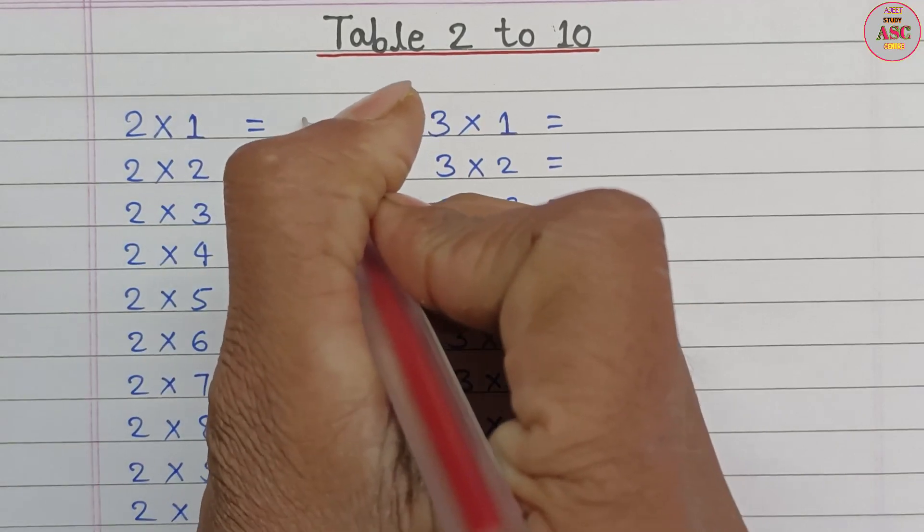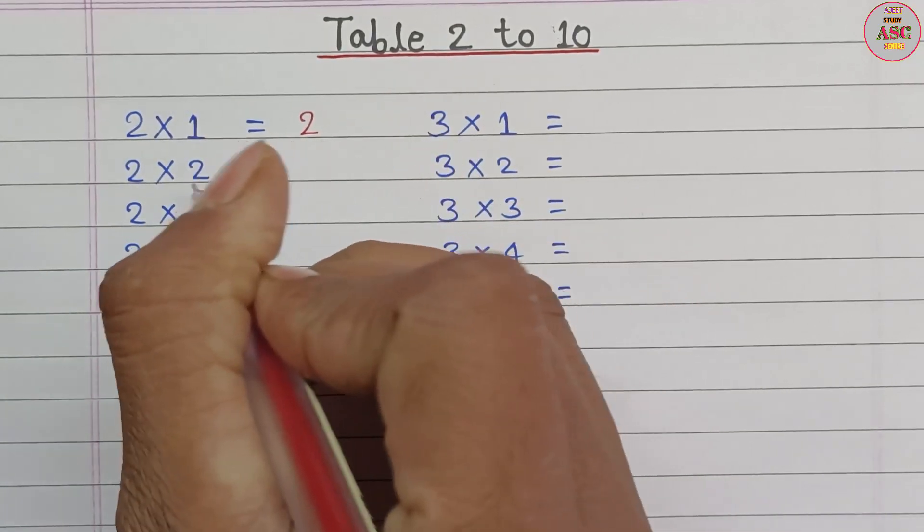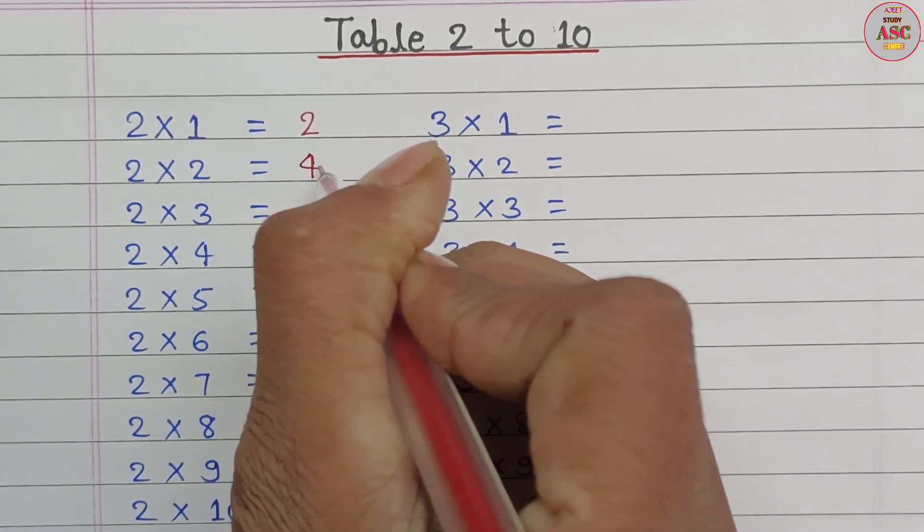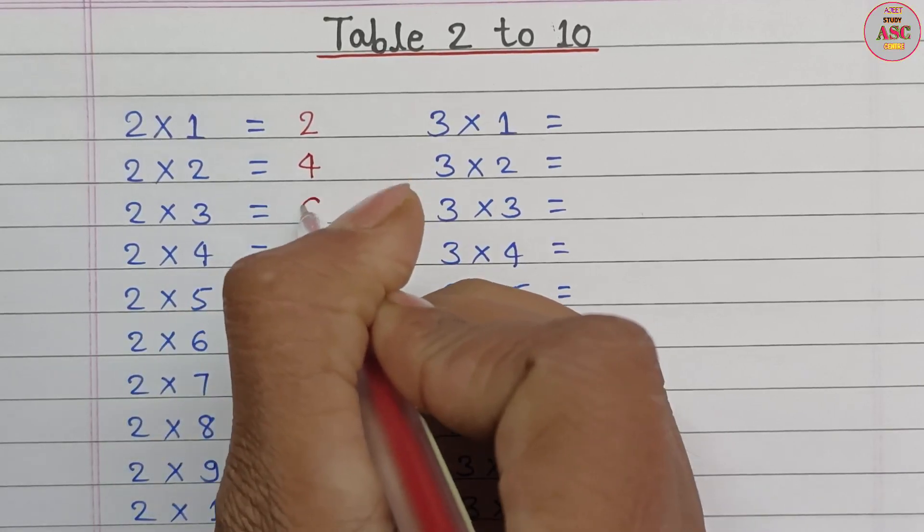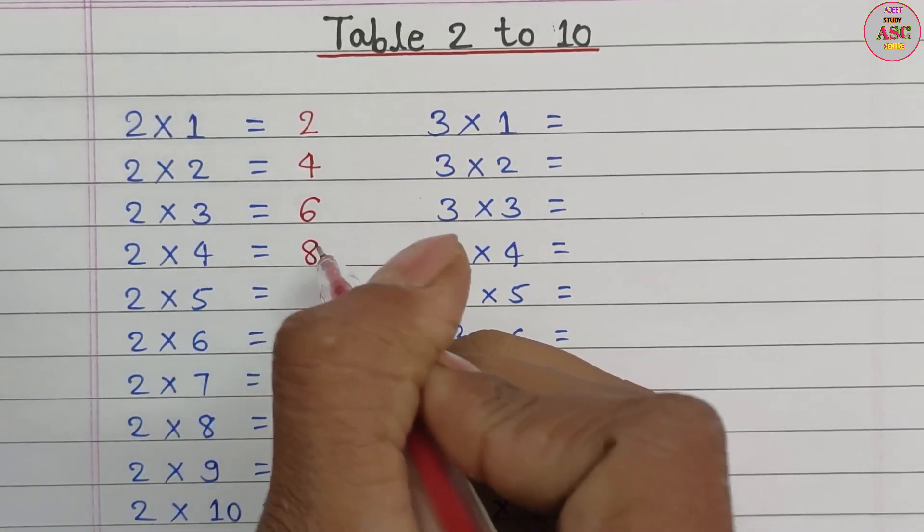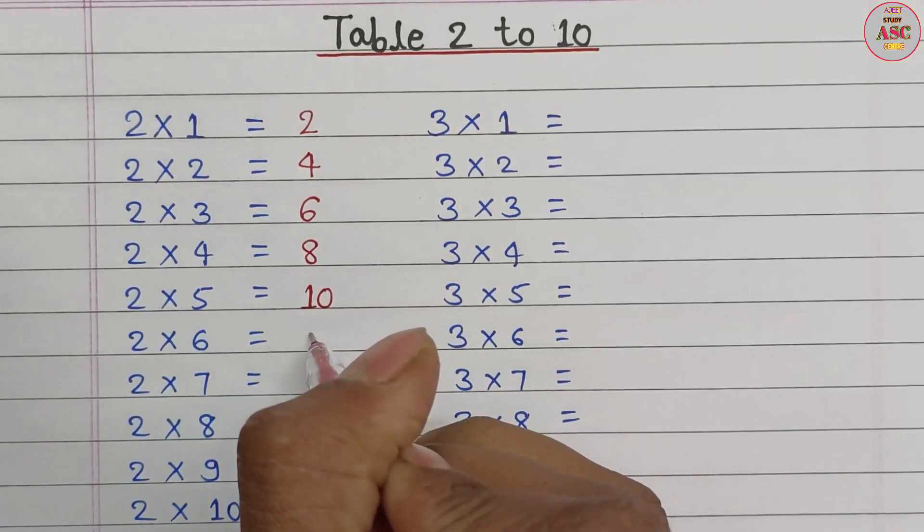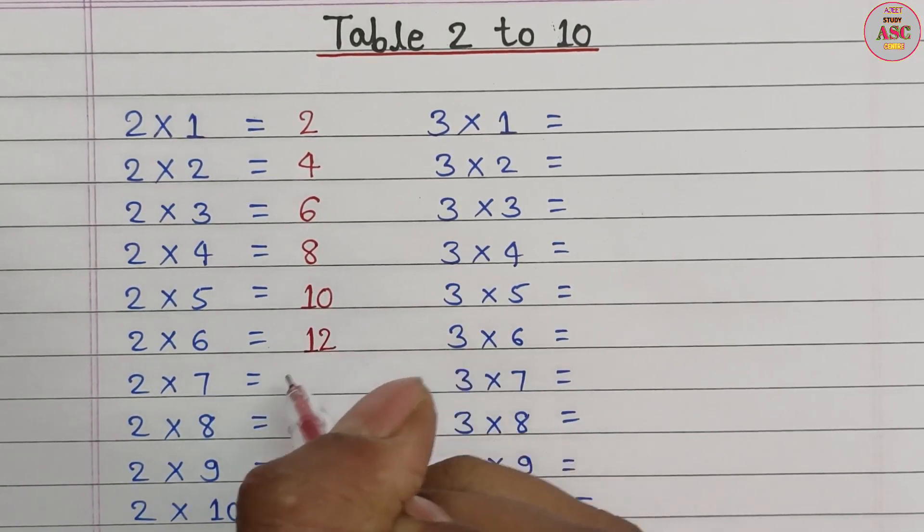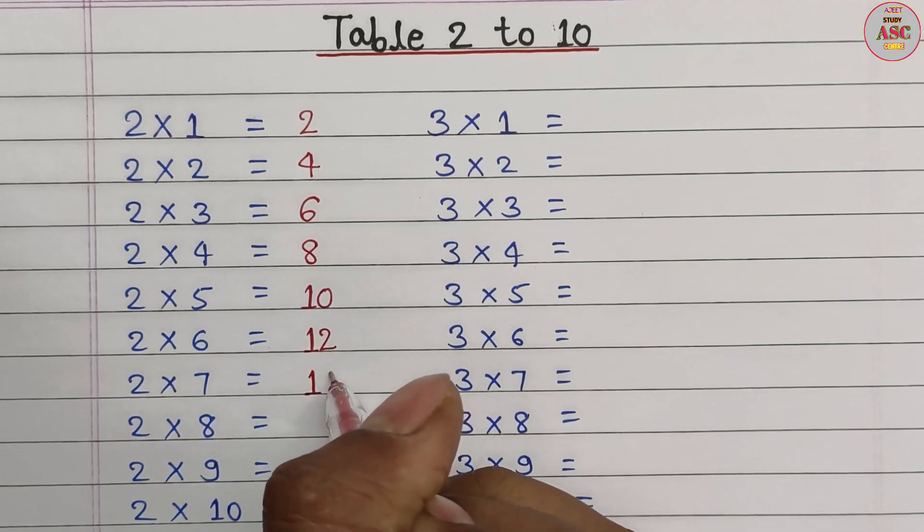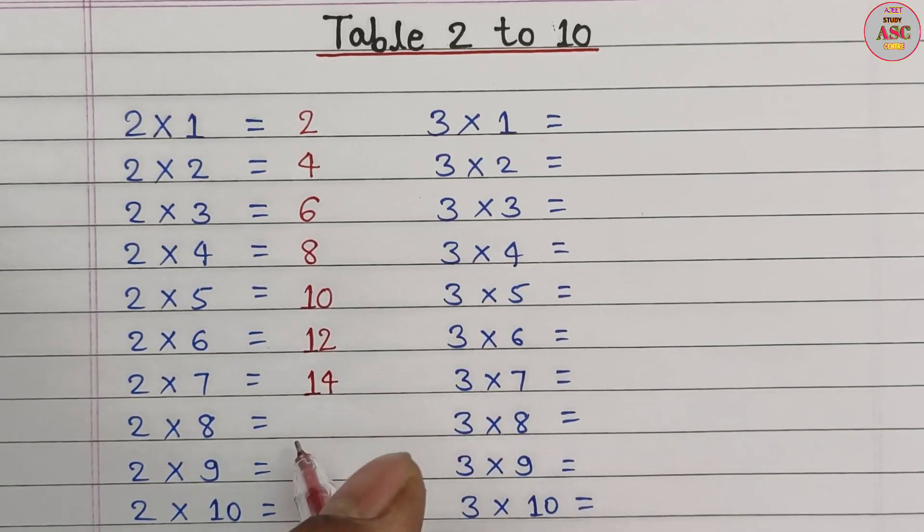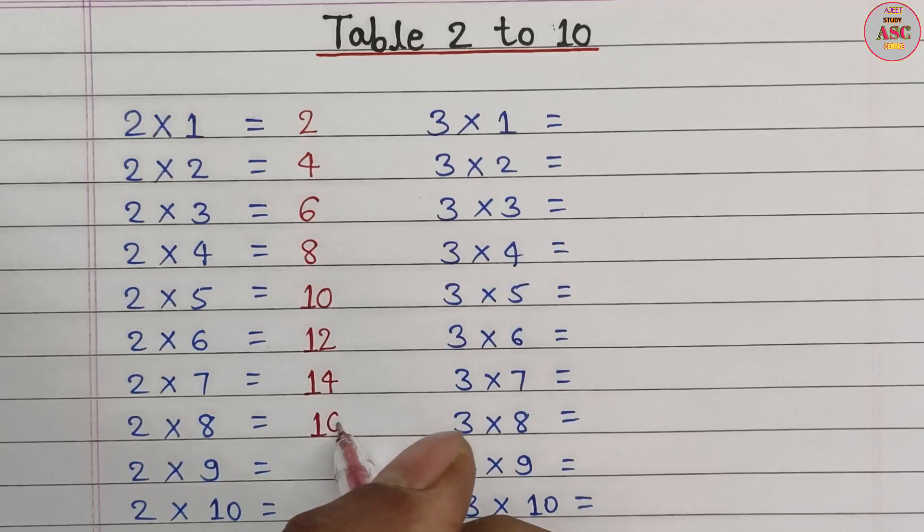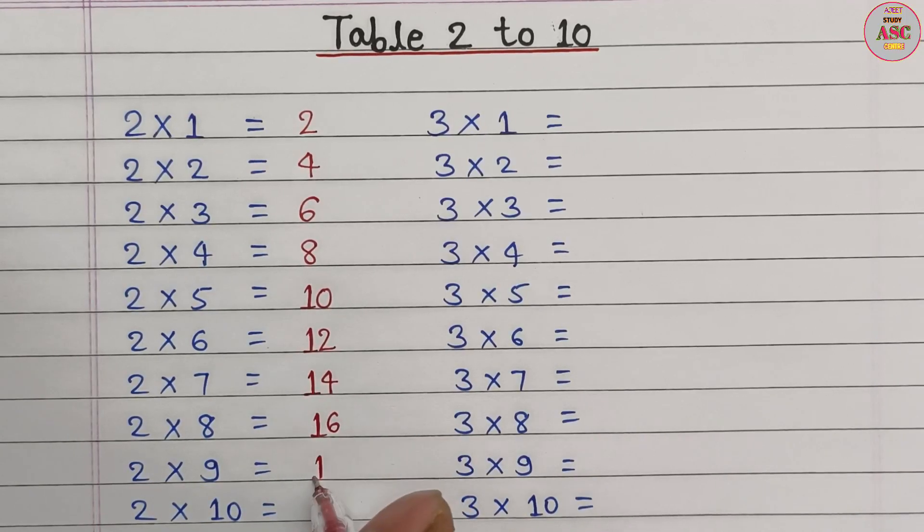2 times 1 equals 2. 2 times 2 equals 4. 2 times 3 equals 6. 2 times 4 equals 8. 2 times 5 equals 10. 2 times 6 equals 12. 2 times 7 equals 14. 2 times 8 equals 16. 2 times 9 equals 18. 2 times 10 equals 20.